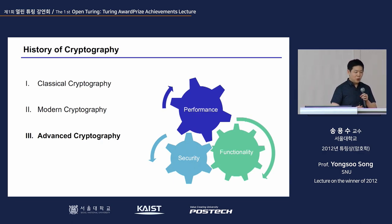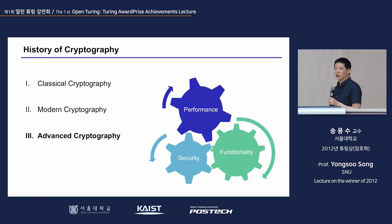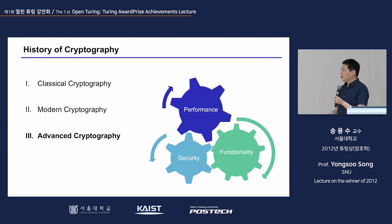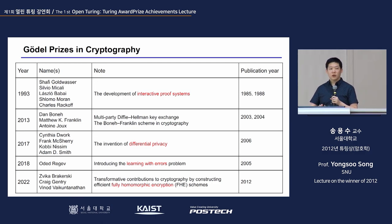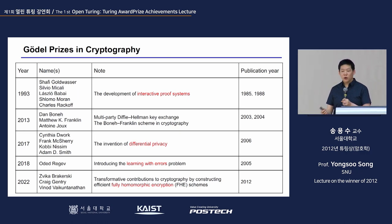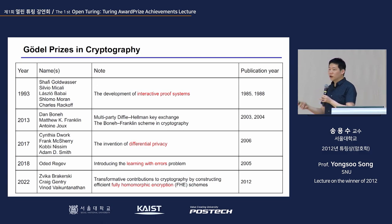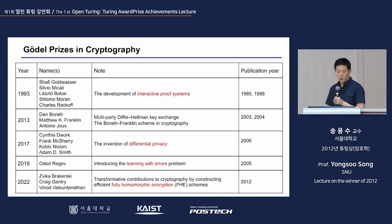This brings us to advanced cryptography, the last chapter. Now that cryptography had entered the science realm and security proofs were possible, researchers thought about what more they could do and wanted to advance it to another level. The Gödel Prize, slightly less prominent than the Turing Award, is given to outstanding researchers. The Turing Award looks at both theoretical novelty and practical impact, while the Gödel Prize focuses more on theoretically interesting research.